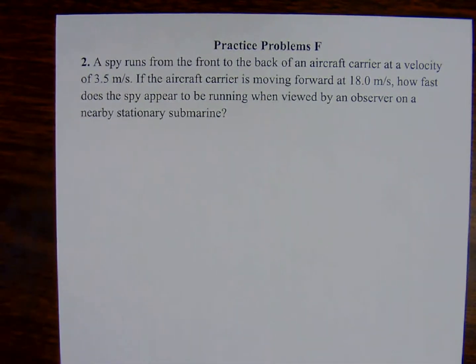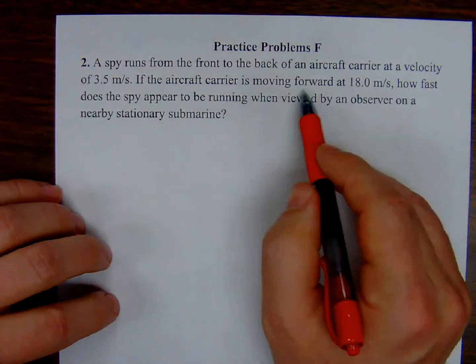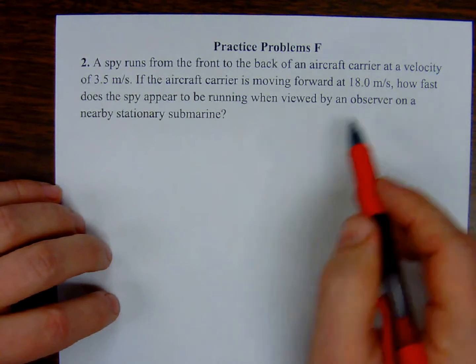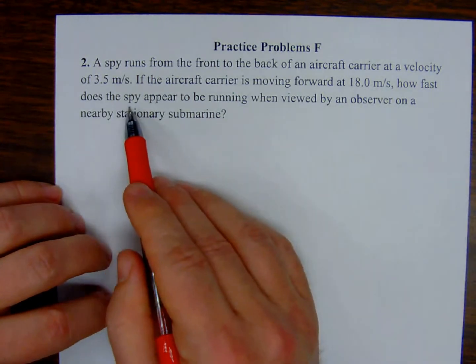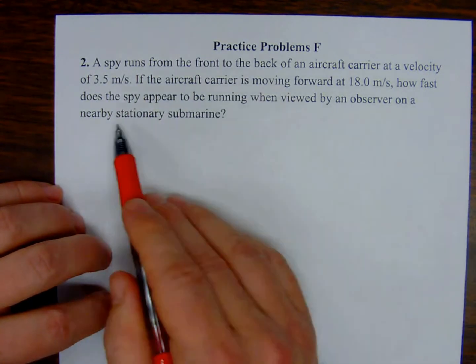A spy runs from the front to the back of an aircraft carrier at a velocity of 3.5 meters per second. If the aircraft carrier is moving forward at 18.0 meters per second, how fast does the spy appear running when viewed by an observer on a nearby stationary submarine?